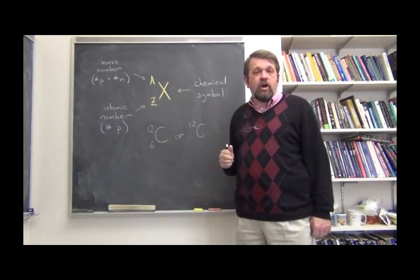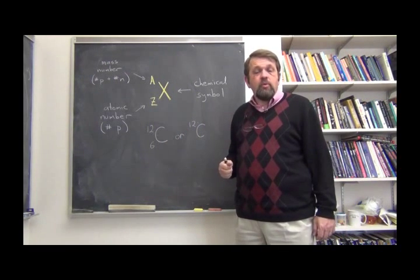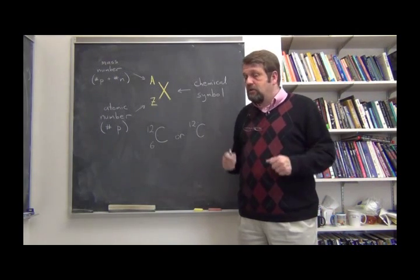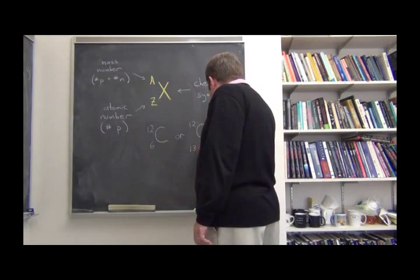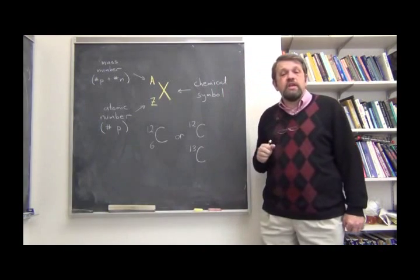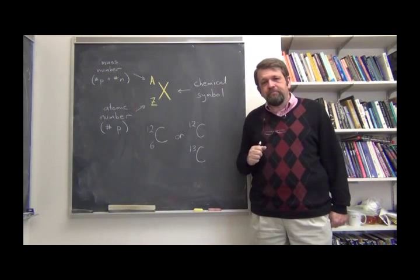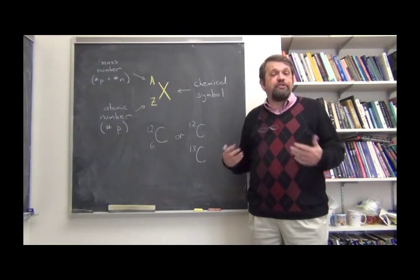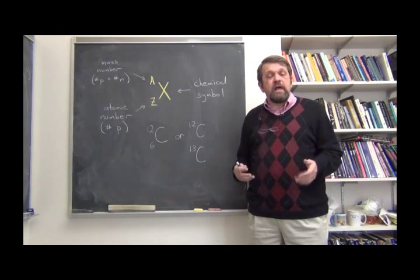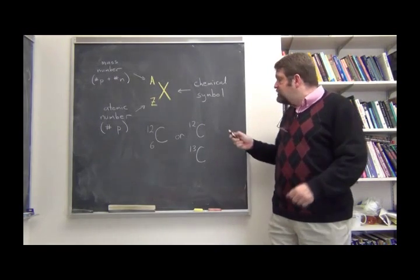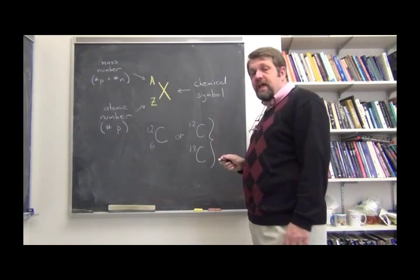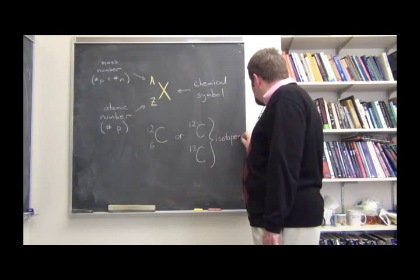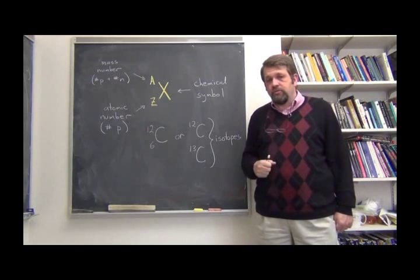Now, this is not the only kind of carbon nucleus. There's another kind of carbon nucleus which has 13 nucleons, 6 protons plus 7 neutrons. And so we could write that this way, 13 carbon, carbon-13. And these two forms of carbon are forms of the same element, but they have different kinds of nuclei, different numbers of neutrons in their nuclei. And so these two kinds of the element are called isotopes of carbon.